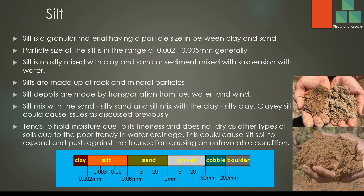Silt. Silt is a granular material having a particle size between sand and clay. The particle size of silt is in the range of 0.002 mm to 0.005 mm. It is mostly mixed with clay and sand as sediments. The sediments come from water mixed with the soil, creating silt. Silt is made up of rock and mineral particles, and silt deposits are formed by transportation via ice, water, or wind. We can see silt deposits very frequently near rivers and waterways.